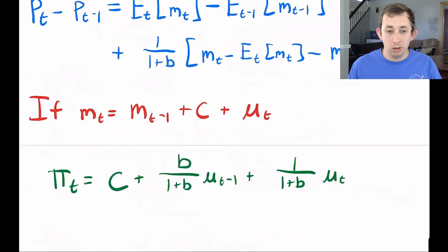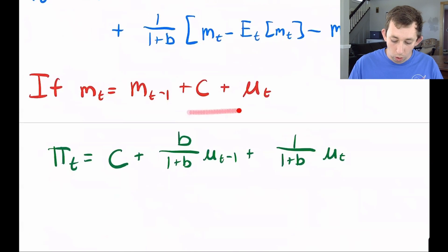Now if the money supply is a random walk, this is what a random walk would look like where we started some value yesterday and we go to a new place. So we have some shock and some constant, then the inflation is just going to be that constant plus the money shock yesterday times b over one plus b plus the money shock today times one over one plus b.